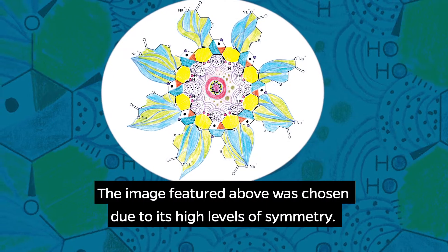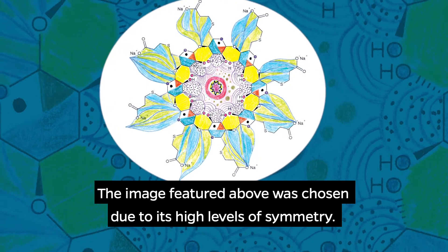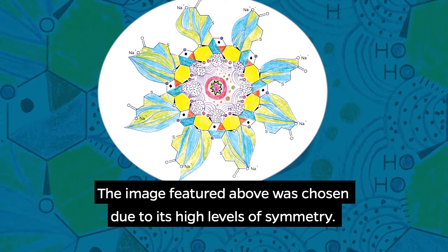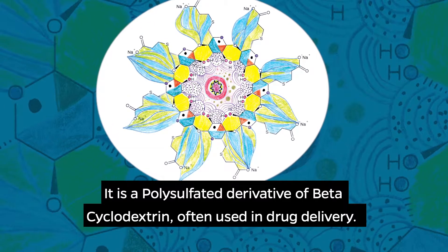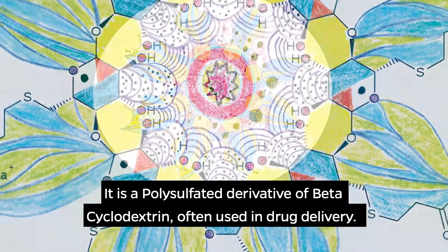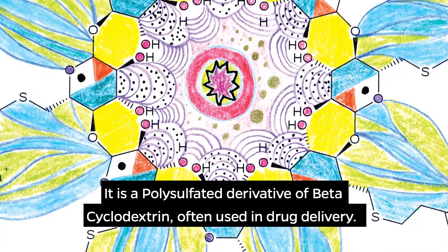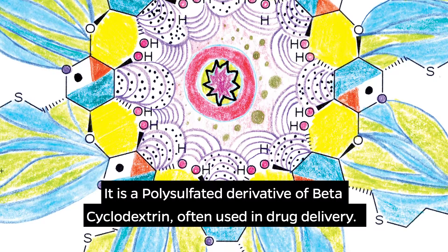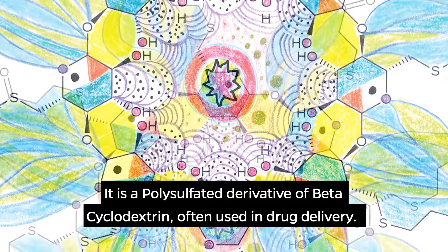The image featured above was chosen due to its high levels of symmetry. It is a polysulfated derivative of beta-cyclodextrin, often used in drug delivery.